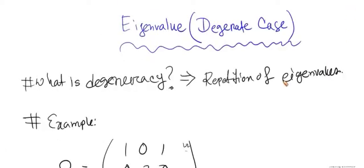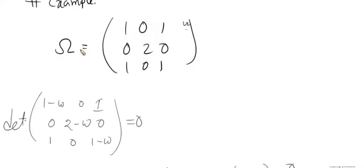Welcome everyone. Today we are going to talk more about eigenvalues, specifically the degenerate case. The first question that comes to mind is: what is degeneracy? Degeneracy is defined by repetition of eigenvalues. For example, if you have a 3x3 matrix, it might happen that one eigenvalue is 1 and the other two are both equal to 3.